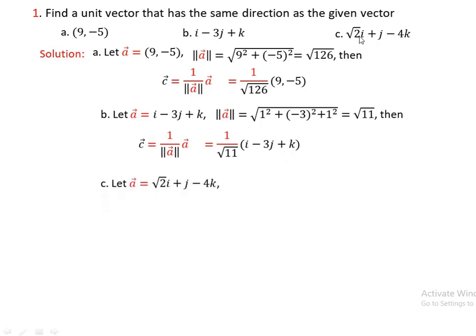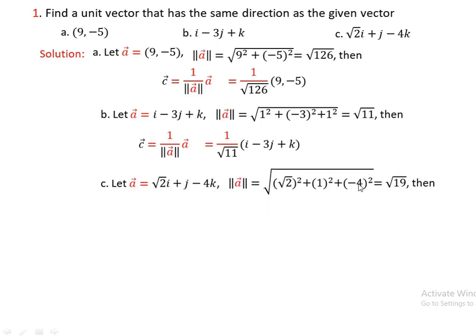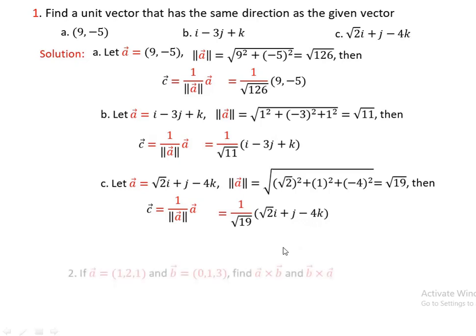Part (c): let vector a = √2·i + j - 4k. Find its norm, then use the formula for the unit vector in the same direction. The norm of a is the square root of (√2)² + 1² + (-4)², which equals the square root of 2 + 1 + 16, equal to the square root of 19. The unit vector c is 1 over the square root of 19 times (√2·i + j - 4k).